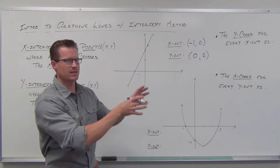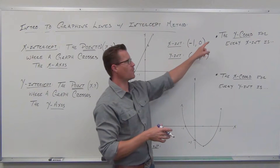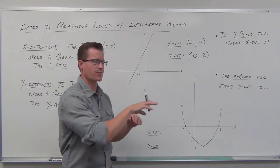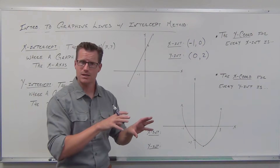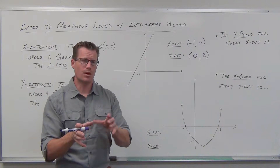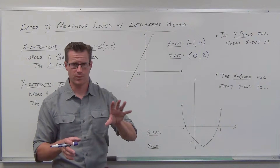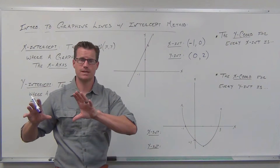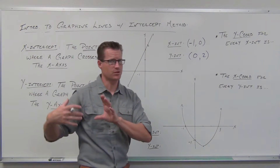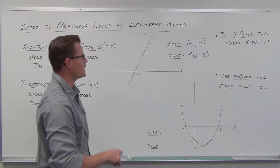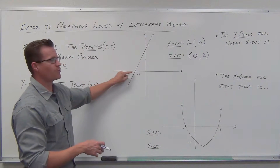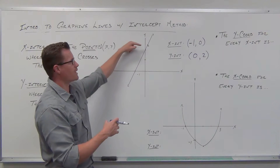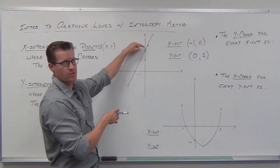Here's where we're trying to get to. We want to figure out what the y-coordinate is for every x-intercept, and what the x-coordinate is for every y-intercept. I really want that to stick in your head before we go any further, because we're about to use that fact to create another technique of graphing called the intercept method. Our x-intercept is negative one, zero. Our y-intercept is zero, two — that's where we cross the y-axis.